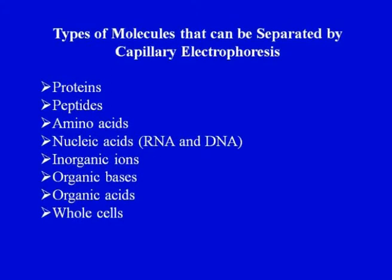One major advantage of using these capillaries is that they reduce heating effects due to the large surface-to-volume ratio, which allows heat to be dissipated easily. High voltage is applied, but because the capillaries are long and have a narrow bore, heat dissipation can occur. Types of molecules that can be separated include proteins, peptides, amino acids, nucleic acids, inorganic and organic molecules, organic acids, and many others.